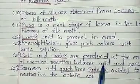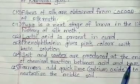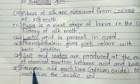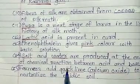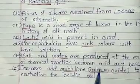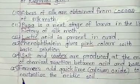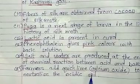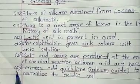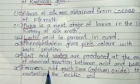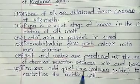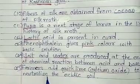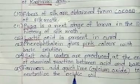Number 15: Farmers add quicklime — calcium oxide — to neutralize the acidic soil.